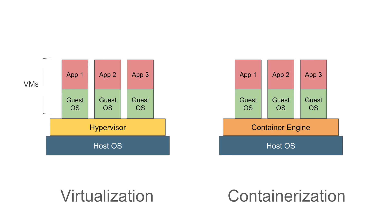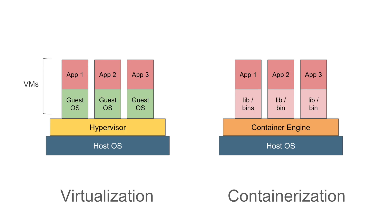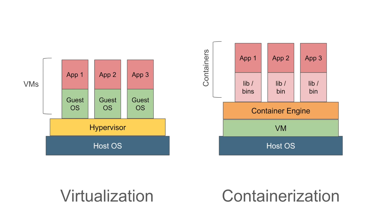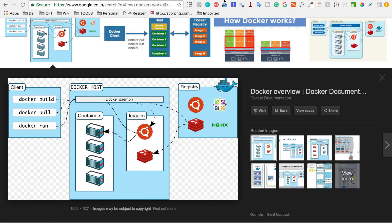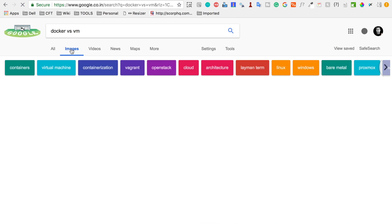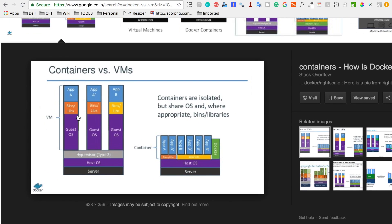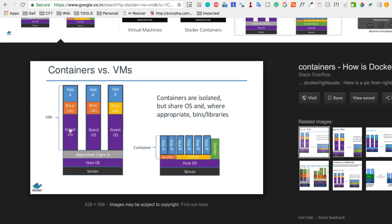In containerization, we do not have a hypervisor — we have a container engine. We do not have a separate operating system for every container; we just have the dependencies, and containers use the host operating system. The advantage is that a container will only use the space and memory required to run the application, and the rest is free for the host operating system or for other containers. You can also create a container over a virtual machine, or directly over your host operating system. Searching 'Docker versus virtual machine' in the browser confirms this comparison visually.